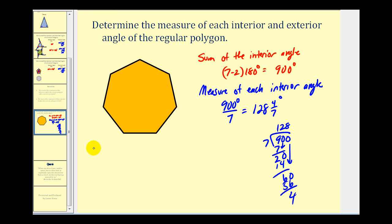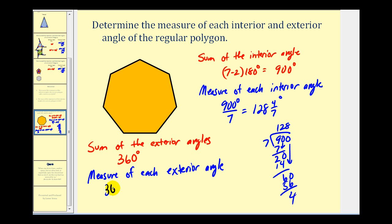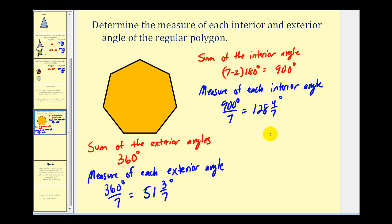For the exterior angles, we know their sum is always 360 degrees. Since this is a regular polygon, each exterior angle is equal, so we divide 360 degrees by seven, giving 51 and three-sevenths degrees. Keep in mind this division approach only works for regular polygons — if the polygon is not regular, each interior and exterior angle may differ. I hope you found this helpful. Thank you for watching.